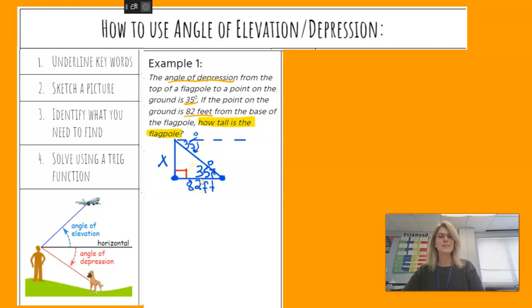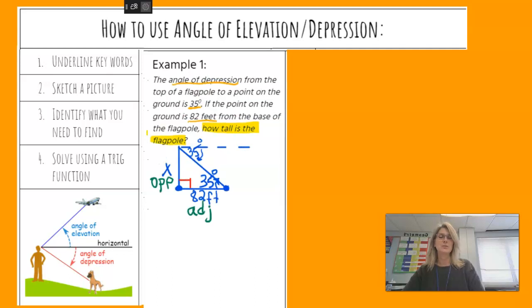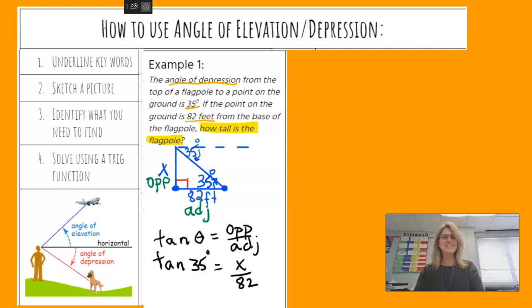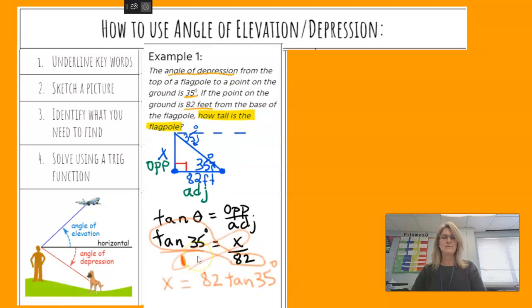Let's label opposite and adjacent. Those are the two sides. So which trig function am I going to use? I hope you're all saying tangent. Tangent of an angle is opposite over adjacent. So I'm going to rewrite the equation to tangent of 35 degrees equals x over 82. Set up a proportion. Do your cross product. So x will equal 82 times tangent of 35. Get your calculator out. What do you get? I hope you got the same thing I did.